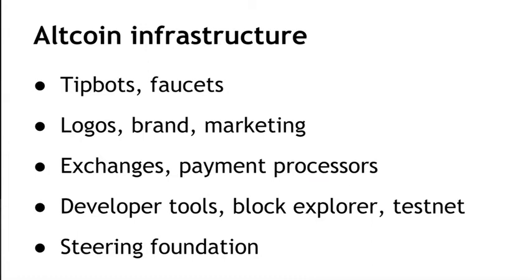Besides a reference client, there's a lot of technical infrastructure that most altcoins have and seem to need in order to be successful. It's important to have some way of initially getting users to have coins. Infrastructure that supports this includes tipbots and faucets. Tipbots allow you to give units of your altcoin to users who aren't already on your network — you deposit some altcoin in a tipbot and it sends the person a message telling them how many altcoins they have available and how to download the reference client and claim it. A faucet gives out small amounts of your altcoin to anyone who shows up at a website, maybe enters an email address. Almost all altcoins also have some kind of distinctive marketing or branding, including logos or a more comprehensive theme.